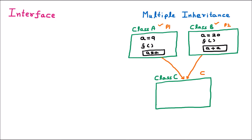We know that class A and class B are both parents of class C, so their members are inherited into class C. In class C we have variable A — but which value? Is it 9 or 20? Again in class C we have function F — but what should the body be? A into A or A plus A? That ambiguity was the problem with C++ multiple inheritance.